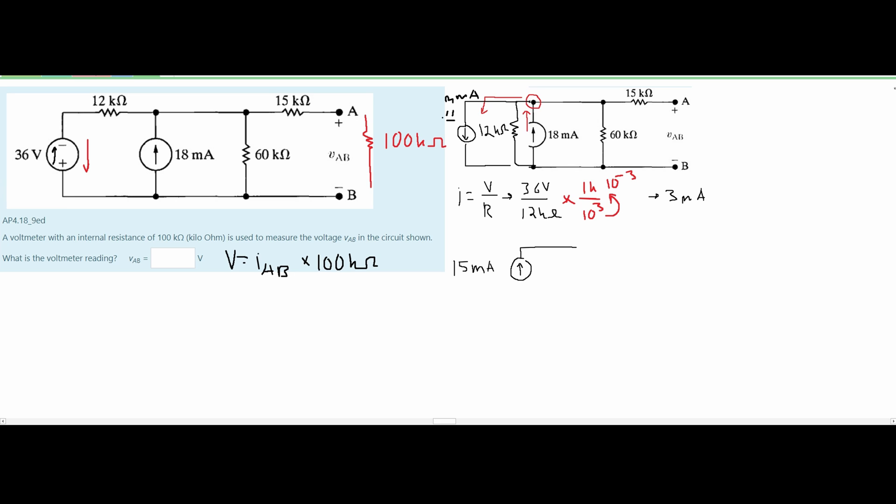Now we can rewrite this. We know that we're going to have a 12 kiloohm resistor right here and we know that we're going to have a 60 kiloohm resistor in parallel with it. And then we're also going to have a 15 kiloohm resistor right here.